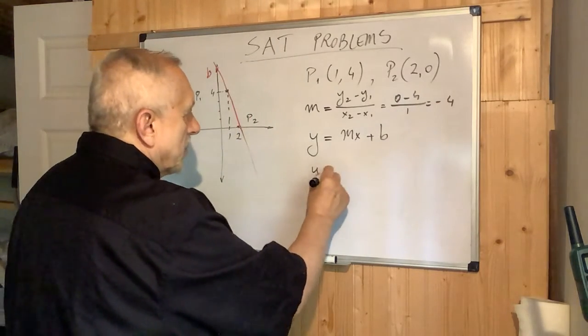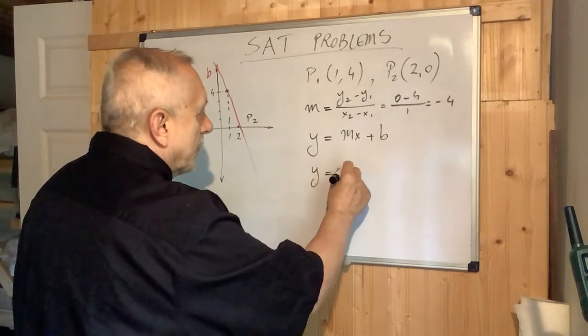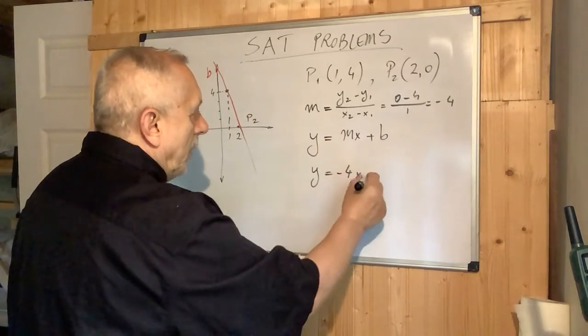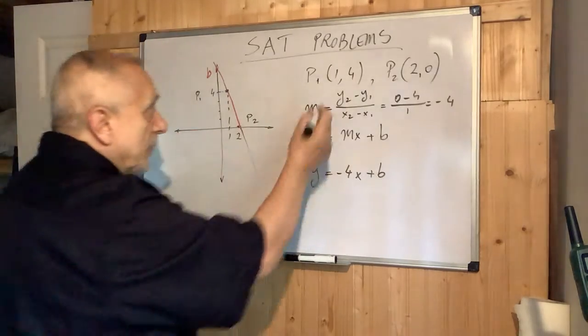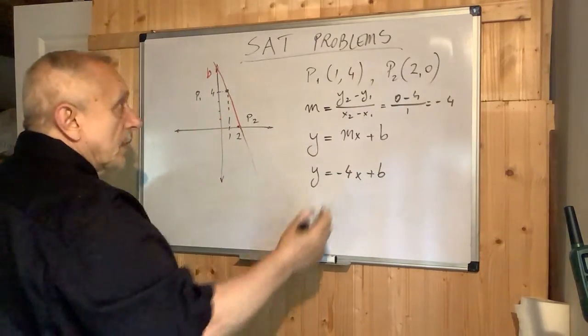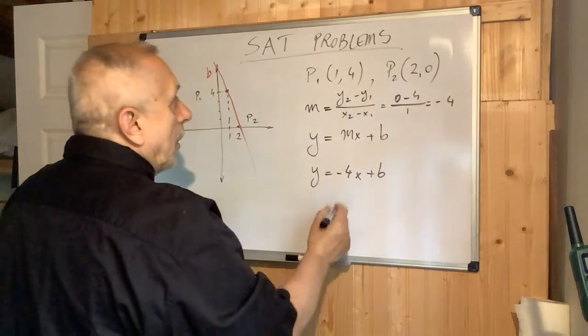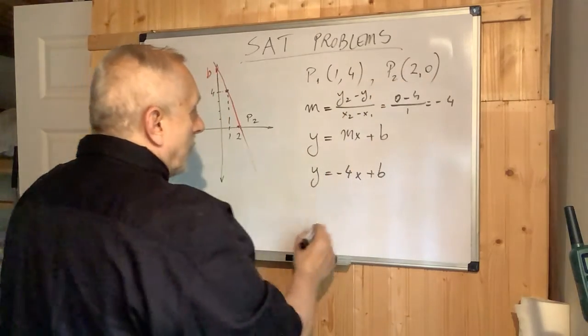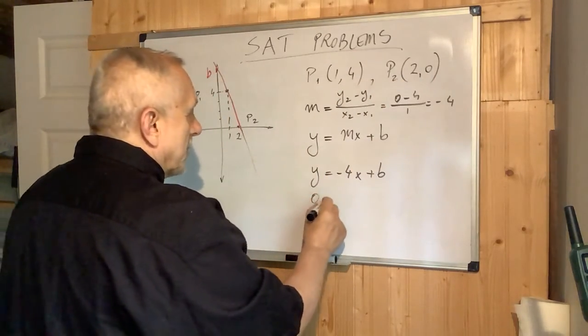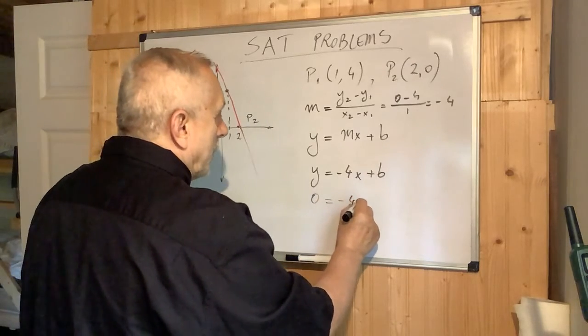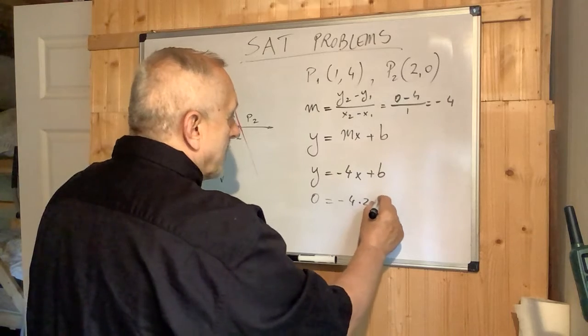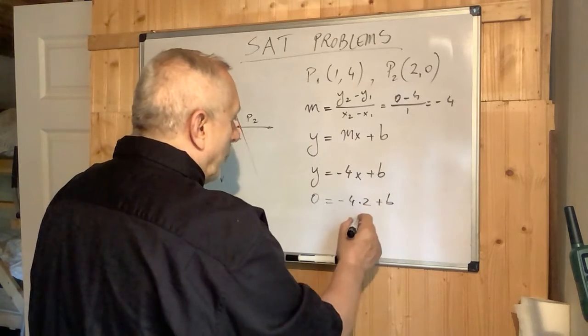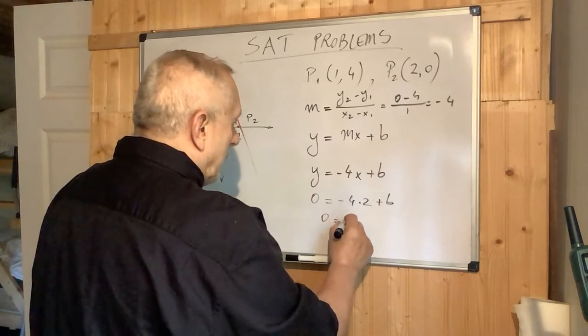In this case, the equation will be y = -4x + b. We found the m. How can we find B? We can use one of these points. When x is 2, y will be 0. So let's substitute: 0 = -4 times 2 plus B. From here, we can easily find B.